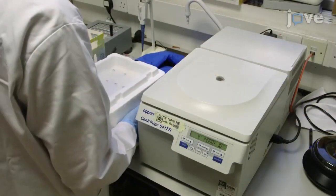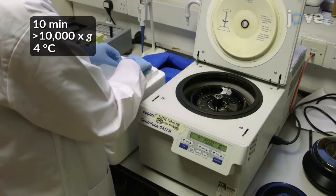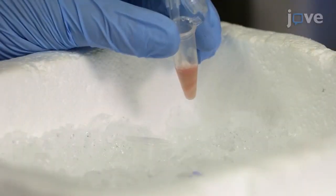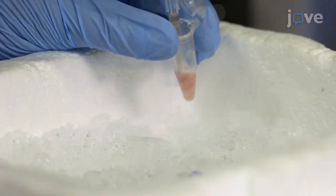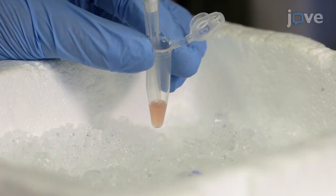Leave the samples on ice for 10 minutes, followed by centrifugation. Then transfer the protein sample containing supernatant to a new tube on ice without disturbing the pellet.